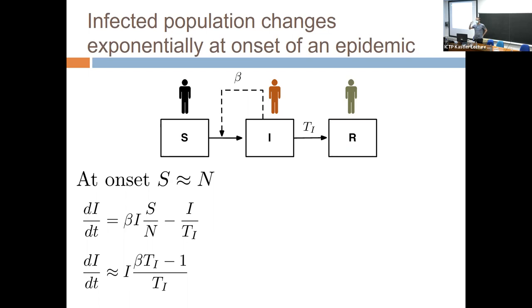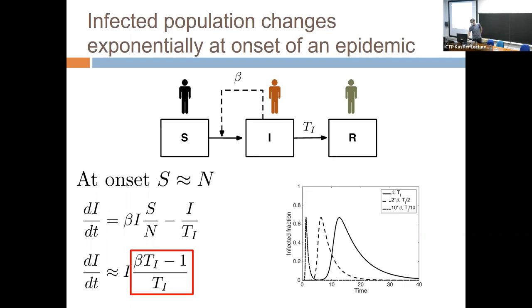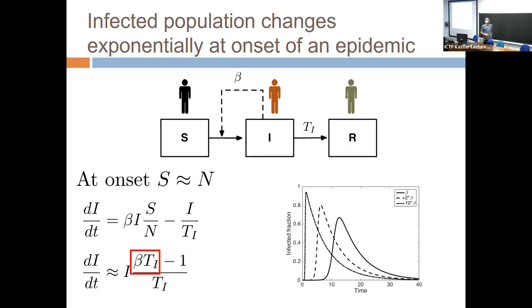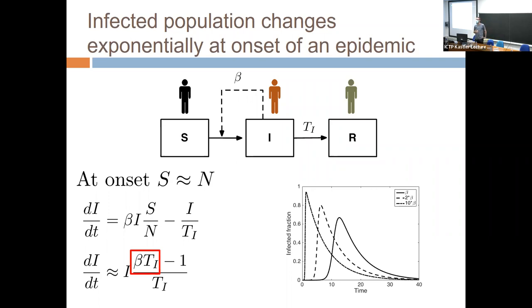This is nothing other than linearizing the system around the disease-free equilibrium. Whether or not the outbreak takes off depends on whether beta * T_i is greater than one — meaning that infectious individual causes more than one other infectious individual during their infectious period. If that's true for one individual it's true for the next, and you can see how this leads to exponential takeoff. We identify that product as R0: the number of infections caused by a single infectious individual in an otherwise susceptible population, a dimensionless number.